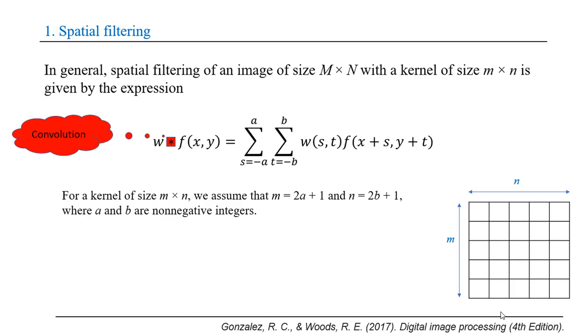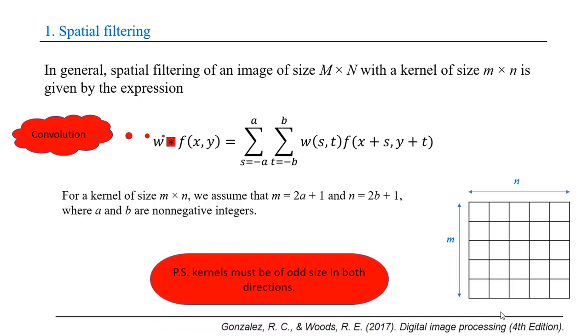Here we assume that m = 2a + 1 and n = 2b + 1. Here there is an important note: kernels must be of odd size in both directions, that means m and n must be odd integer numbers.